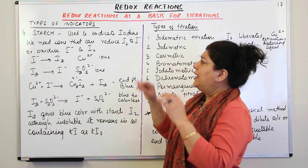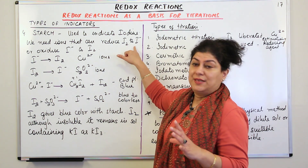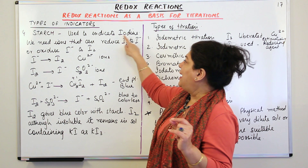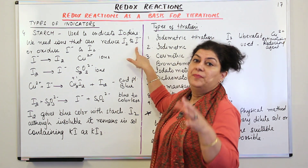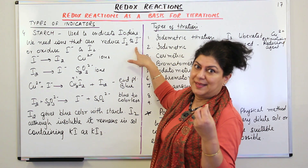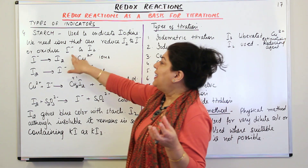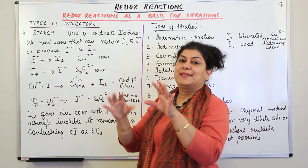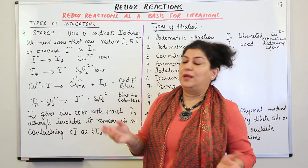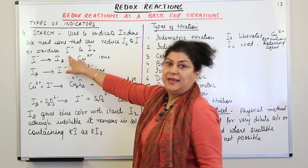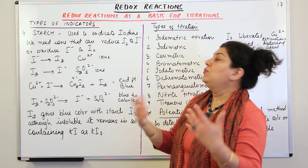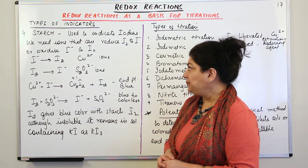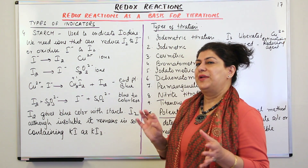When I2 is turning into I⁻, I2 gives the blue color, so when it converts to I⁻ the blue color will disappear — that will be your end point. And when I⁻ is turning into I2, as soon as I2 appears it gives the blue color. So your end point when I⁻ is converting to I2 would be the appearance of blue color in the presence of I2.